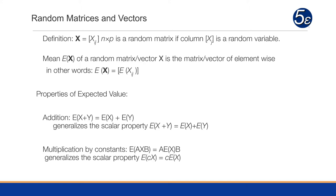Some interesting properties of the expected value: if we add the expected value of two matrices X plus Y, it's equal to the expected value of X plus the expected value of Y. If we multiply by constants A and B, E of AXB equals A times the expected value of the random matrix X times B. This generalizes the scalar property that E of cX equals c times the expected value of X.